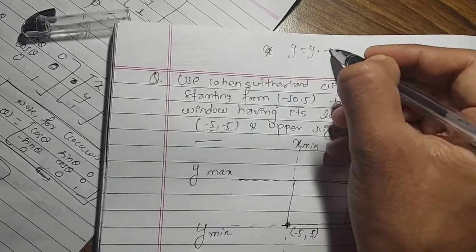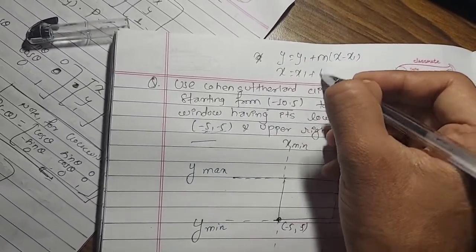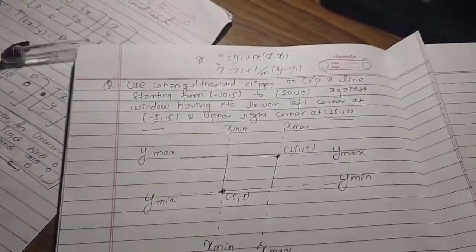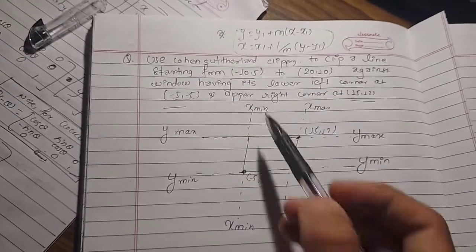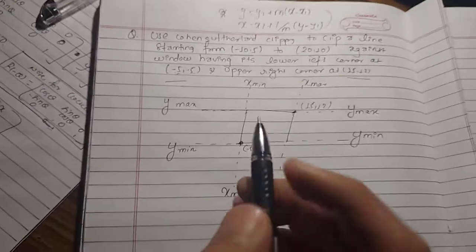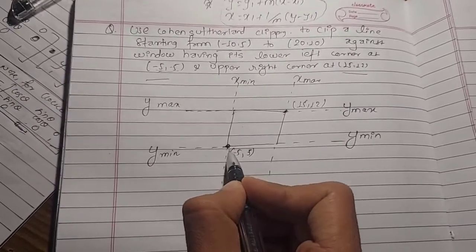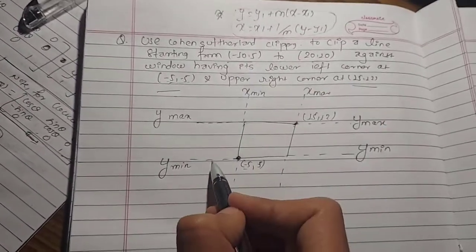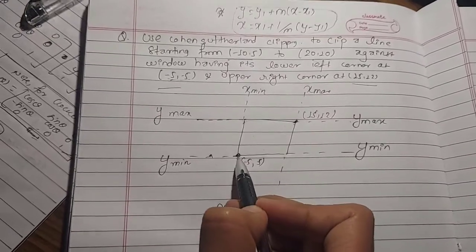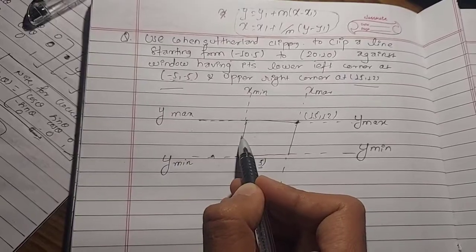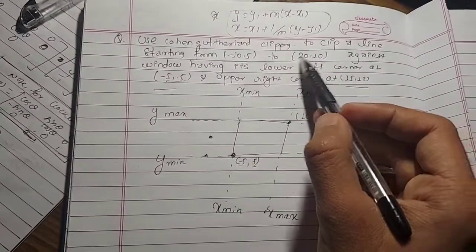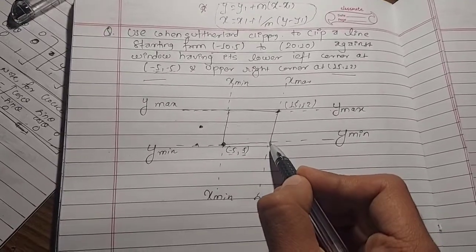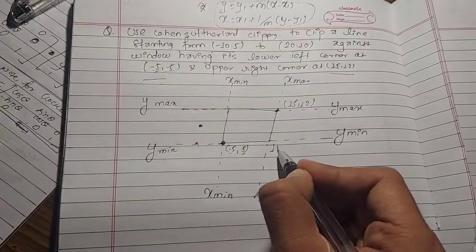Now we calculate. We use the formula y equals y1 plus m(x minus x1) and x equals x1 plus (1/m)(y minus y1). We identify the line endpoints: the first point is minus 10 comma 5 and the second point is 20 comma 10. We determine which region each point falls into.